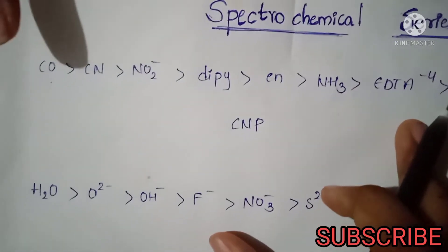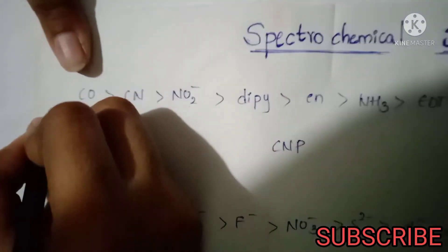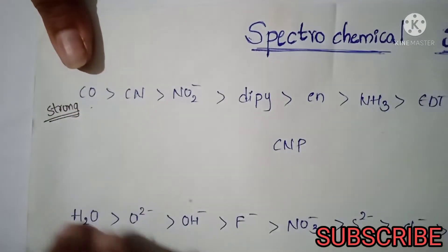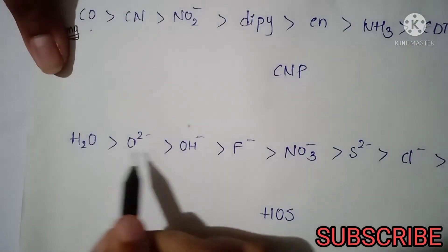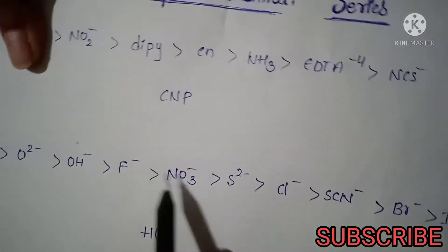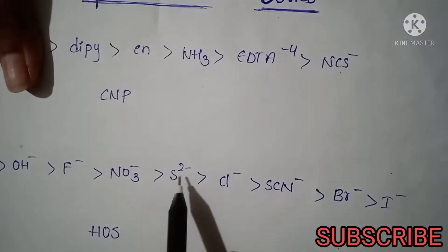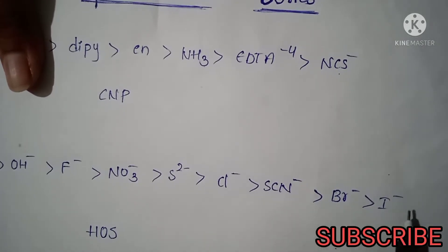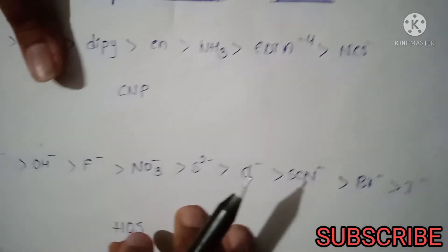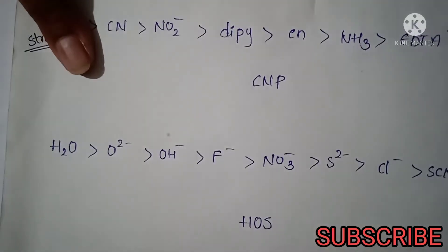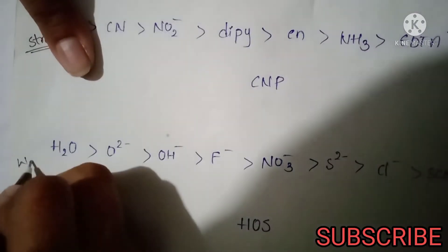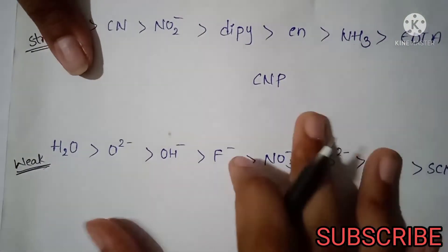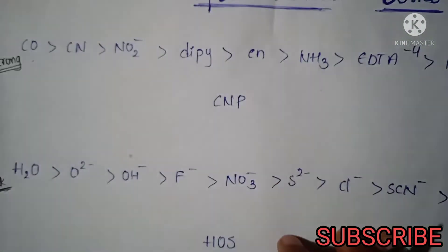The weak field ligands are: H₂O, OH⁻, F⁻, O₃²⁻, S²⁻, Cl⁻, SCN⁻, and bromide. So these are the weak field ligands.